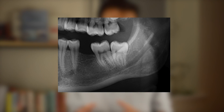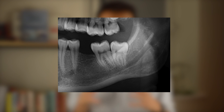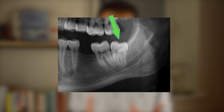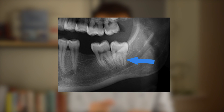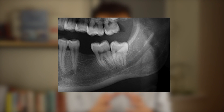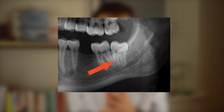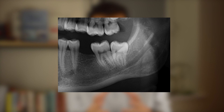Now let's look at some examples. Here we have a portion of an OPT demonstrating a lower left eight. Working through the mnemonic: looking at the crown, there's no obvious caries and the crown morphology looks relatively normal. Looking at the roots, I can identify two — a distal root that is relatively straight and a mesial root with a slight curve. The tooth is disto-angular, and that mesial root is very closely pressed against the seven, which may add complexity to surgical removal. Looking at the impaction, there hasn't been significant bone loss distally, so it is likely bony and potentially soft tissue as well.